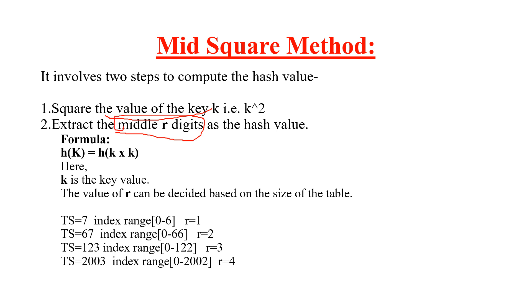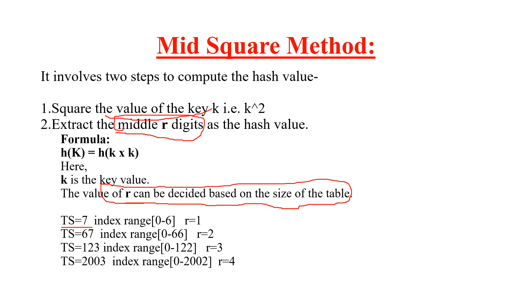What is R, and how will you decide R? R can be decided based on the hash table size. Suppose the table size given is 7, then what will be the R value? The index range is 0 to 6, so you will take R equal to 1. You cannot take R equal to 2 because the index only goes to 6, meaning the maximum 2-digit number would be 66, which is not a valid index. So you will take R equal to 1.